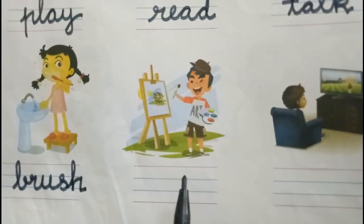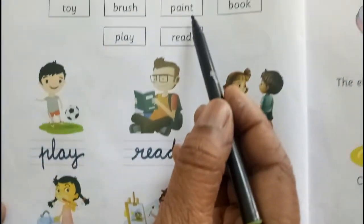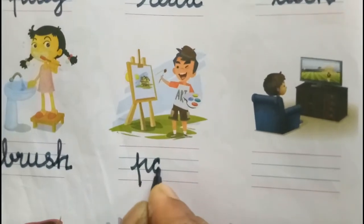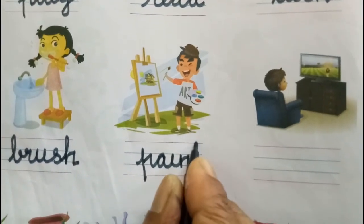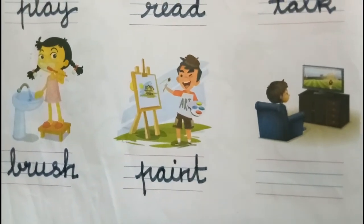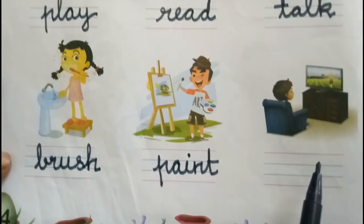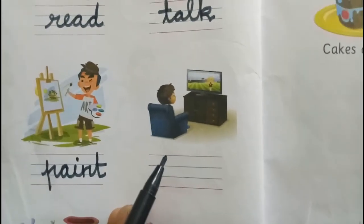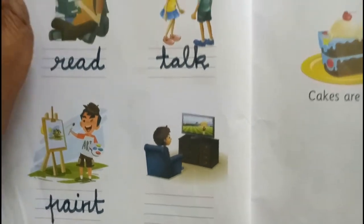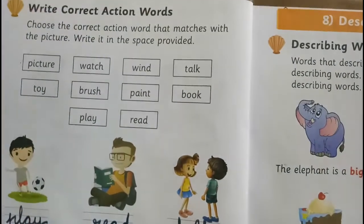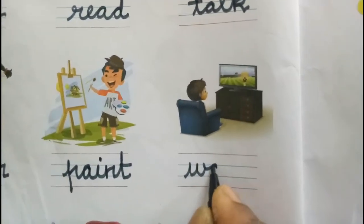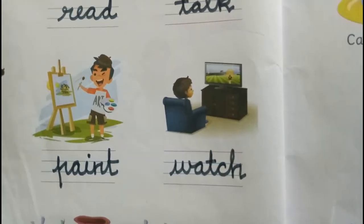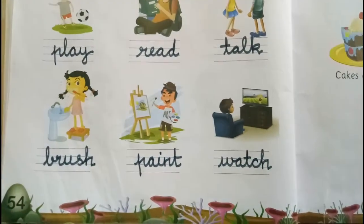And this boy is painting the picture. Paint. Whatever you are writing, you have to say and write — P-A-I-N-T. Paint. And this — boy or a girl? Boy. What is he doing? He is watching TV. Watch. W-A-T-C-H. Write that on the four lines. Watch. Like this you have to do book page number 54.